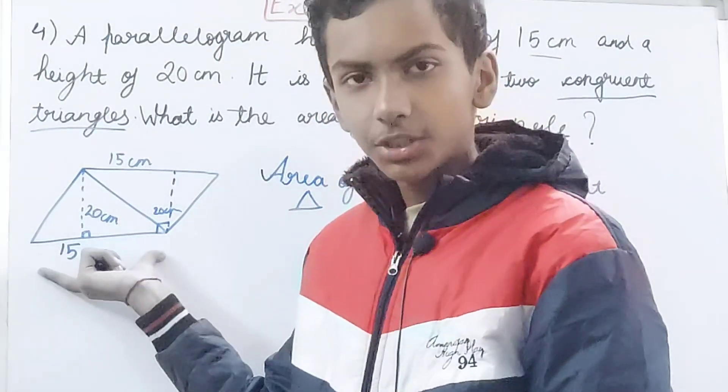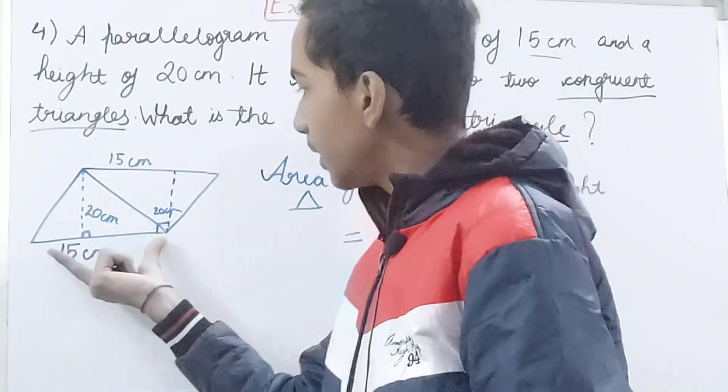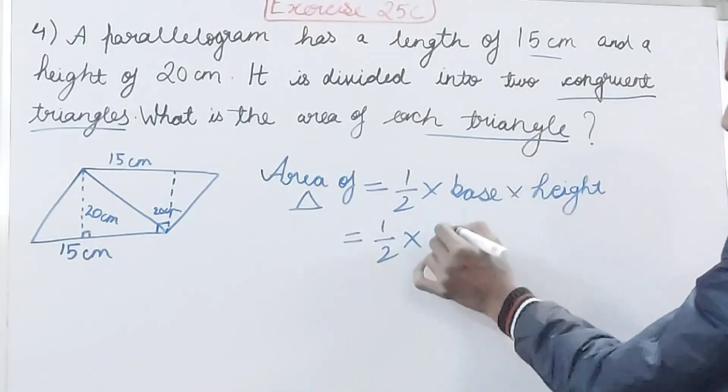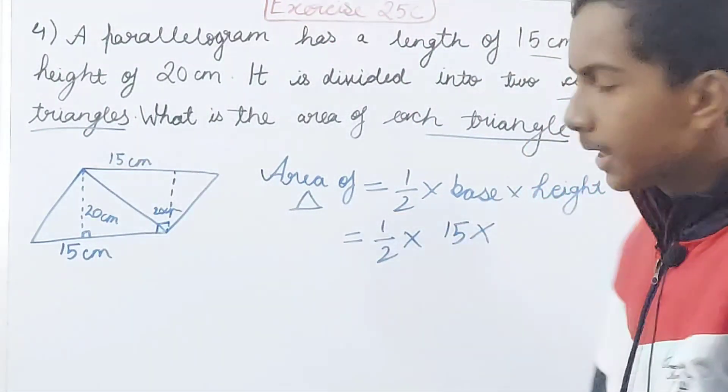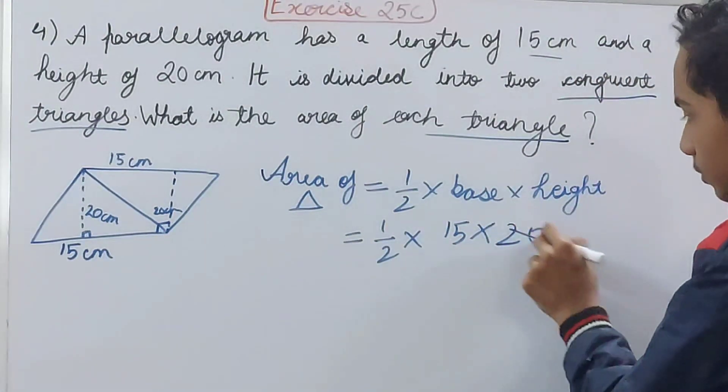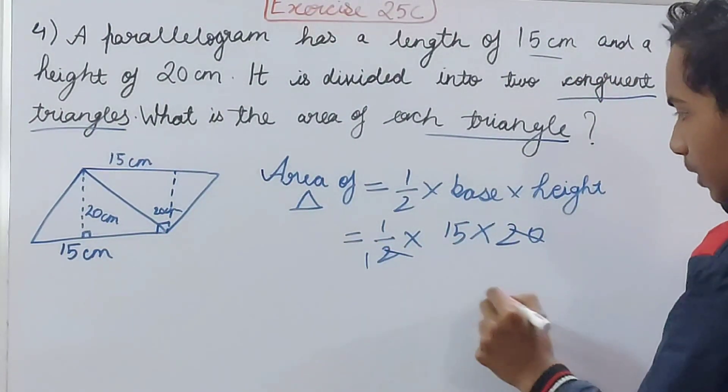Base you have 15 so 1 by 2 into 15, height also you have got here is 20, so into 20. Solve this, so you have 1 by 2, this is 10, so this is coming out to be 150 square centimeters and that's your answer.